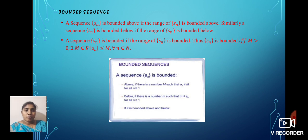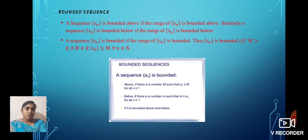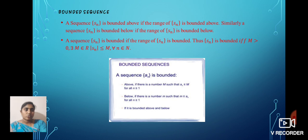Next, we define bounded sequence. A sequence {Sn} is bounded above if the range of {Sn} is bounded above. Similarly, a sequence {Sn} is bounded below if the range of {Sn} is bounded below. A sequence {Sn} is bounded if the range of {Sn} is bounded, thus {Sn} is bounded if and only if there exists M greater than 0, M belongs to R, such that |Sn| is less than or equal to M for every n belongs to N.